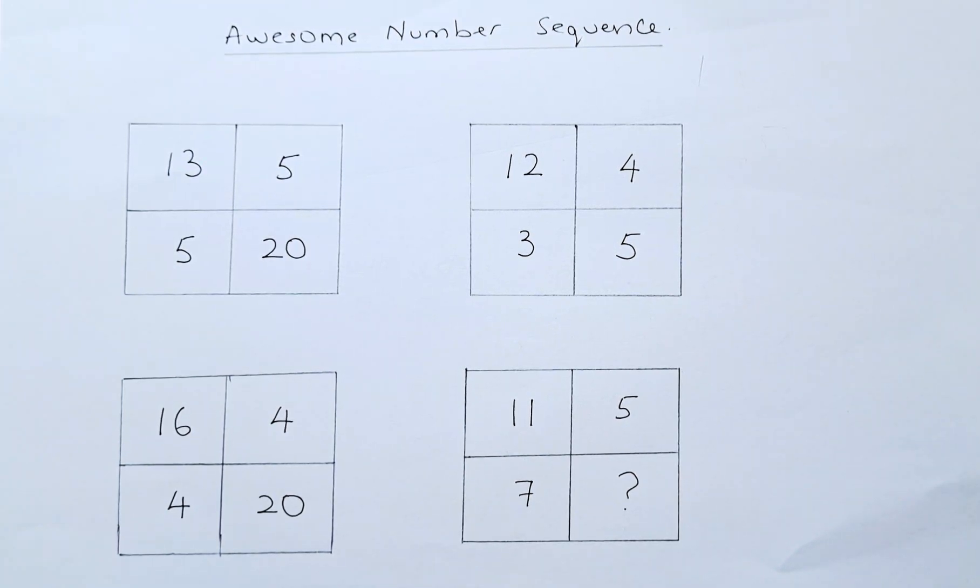In the third box, we have 16, 4, 4, 20. And in the last box, we have 11, 5, 7, and a question mark.